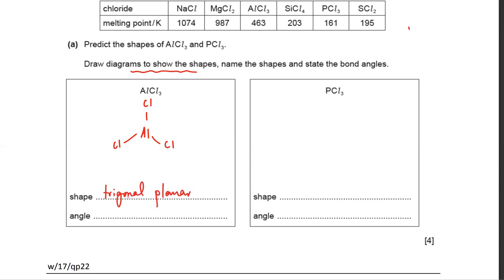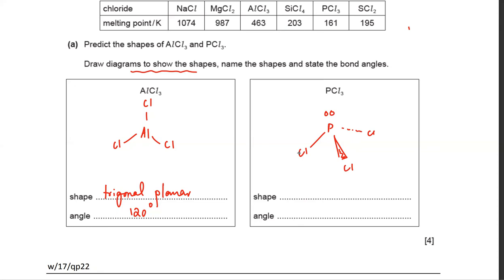The angle in AlCl3 is 120 degrees. For PCl3, phosphorus has five electrons — it's in group five — so three are bonding and there is one lone pair. It's going to be derived from a tetrahedral shape with the top missing; instead of a bond on top there's a lone pair. So one lone pair, three bond pairs — that's a trigonal pyramidal shape, like a pyramid with the lone pair sitting on top.